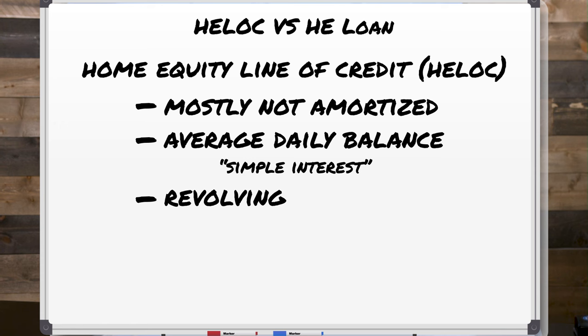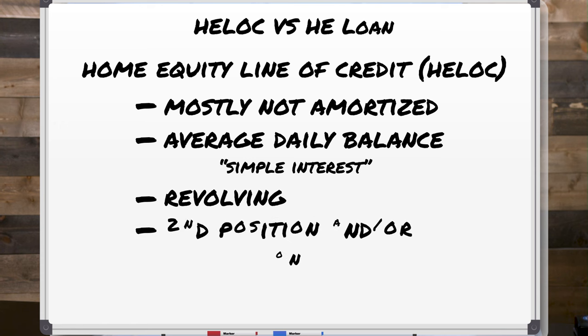Speaking of daily basis — it is revolving, meaning you can pay back whatever balance you've incurred on your HELOC and reuse any principal portion of it. For example, if you had a ten thousand dollar balance on your HELOC and you made a five thousand dollar principal payment, you can go and reuse that five thousand dollars. So it's revolving — it's kind of like a credit card. With the HELOC it can be second position.